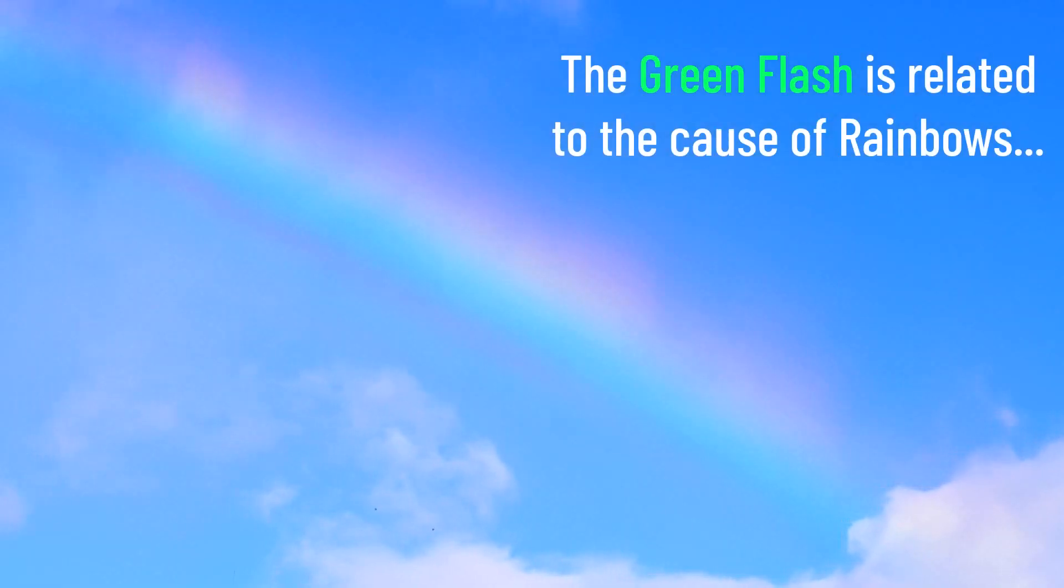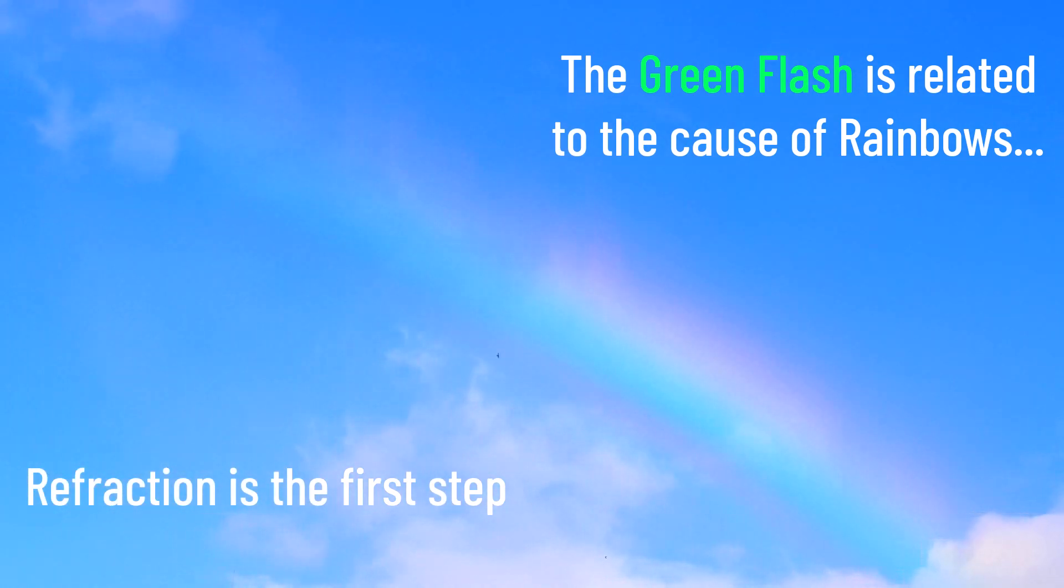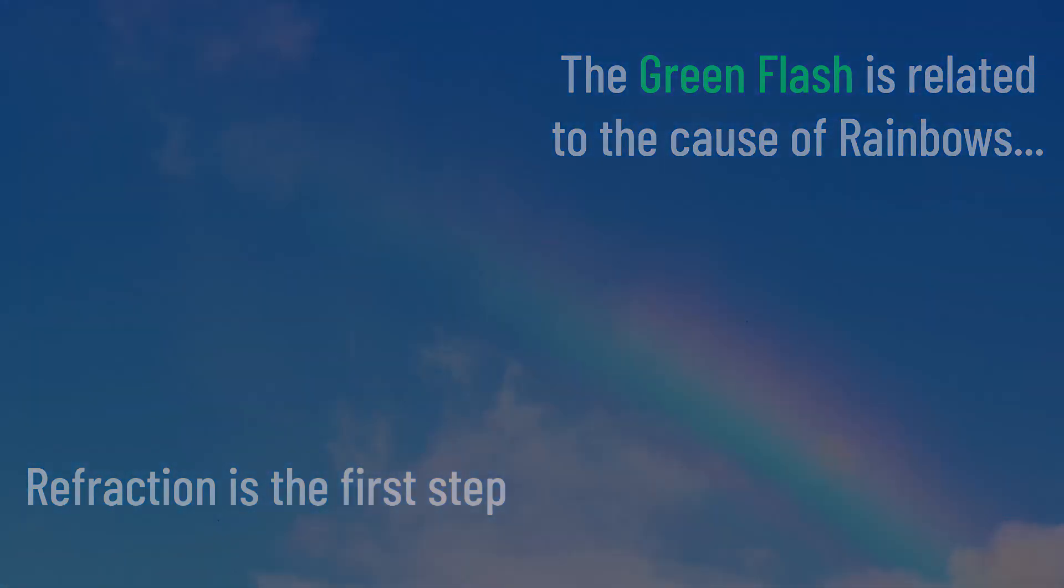Interestingly, this is also what causes rainbows, as light refracts through more optically dense water droplets in the air and splits into the rainbow of visible colours. This is also why red is on the opposite side of violet in every rainbow.